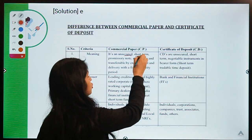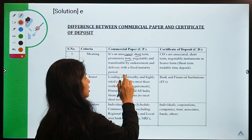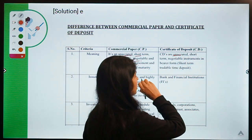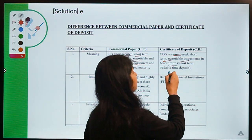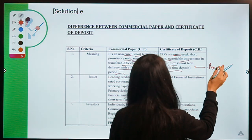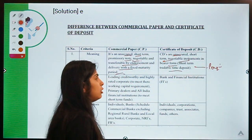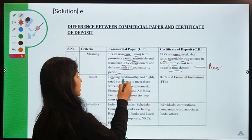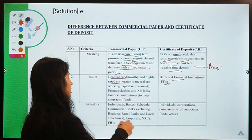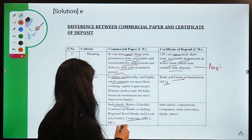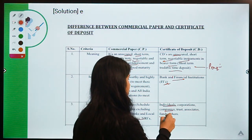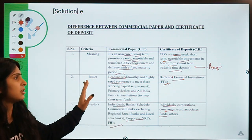Certificate of Deposit is mainly provided by banks or financial institutions — the bank takes a deposit and gives you a certificate as proof. Both are short-term negotiable instruments, but CDs can be relatively longer-term compared to commercial paper. Investors in CP can include individuals, banks, corporates, NRIs, and foreign investors, while CD investors include individuals, corporations, companies, and trusts.